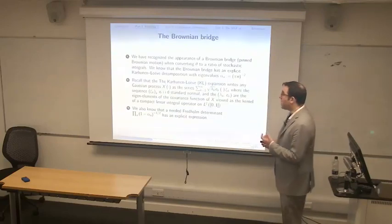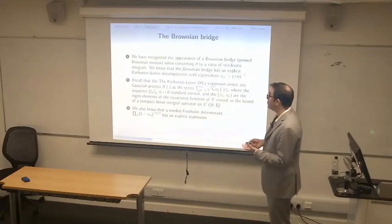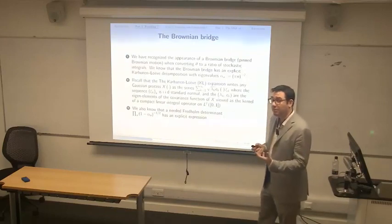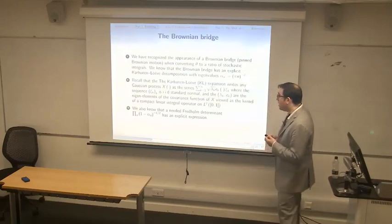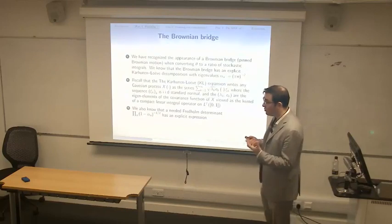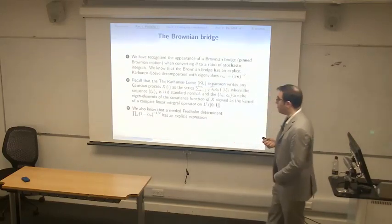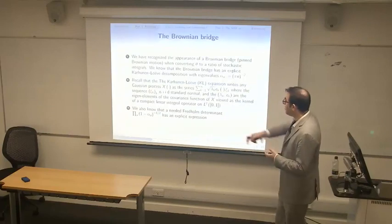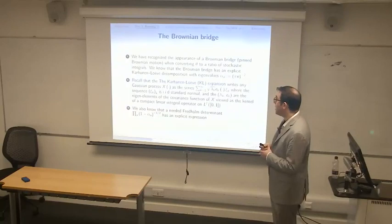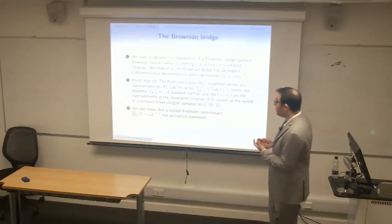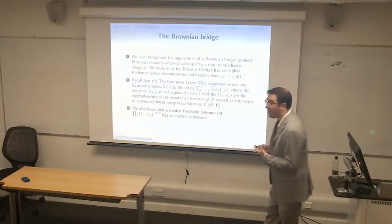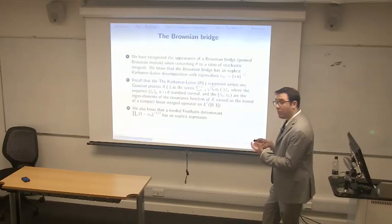The result is very nice: this double stochastic integral shows we can rewrite theta, which is an integral with respect to time, in terms of a stochastic integral. We've recognized the appearance of a Brownian bridge when converting theta to a ratio of stochastic integrals. The Brownian bridge has a Karhunen-Loève decomposition with eigenvalues that can be computed explicitly as 1/(π²n²) — which is special, since it's often hard to calculate eigenvalues explicitly in Karhunen-Loève expansion theory.